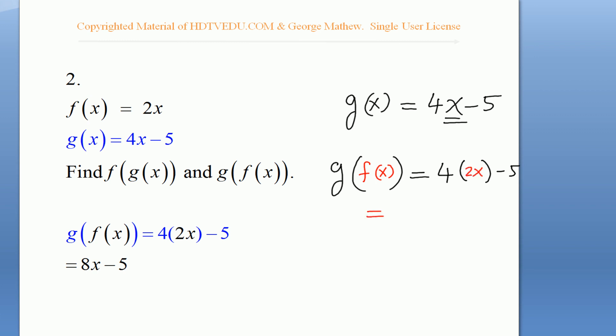So, what do we get? 4 times 2x is 8x minus 5. So, what is g of f of x? 8x minus 5.